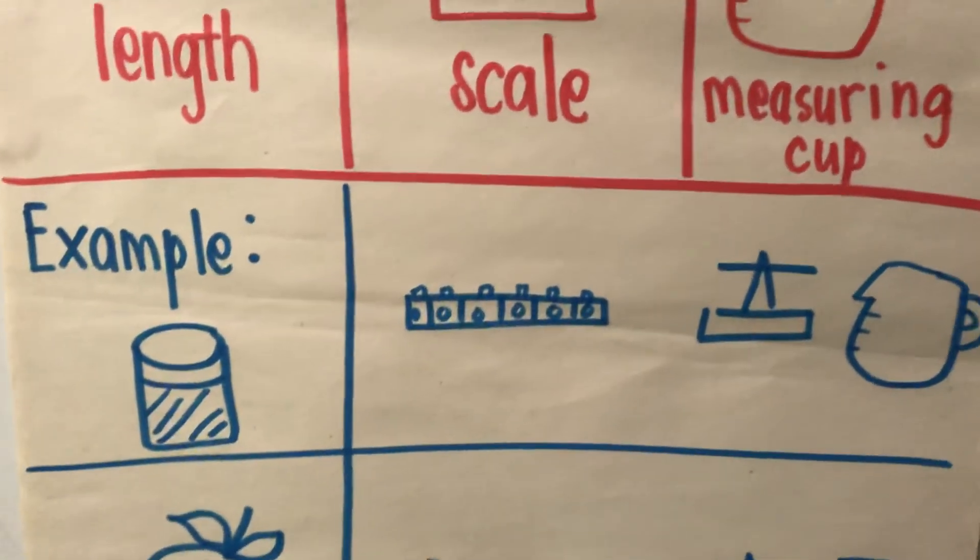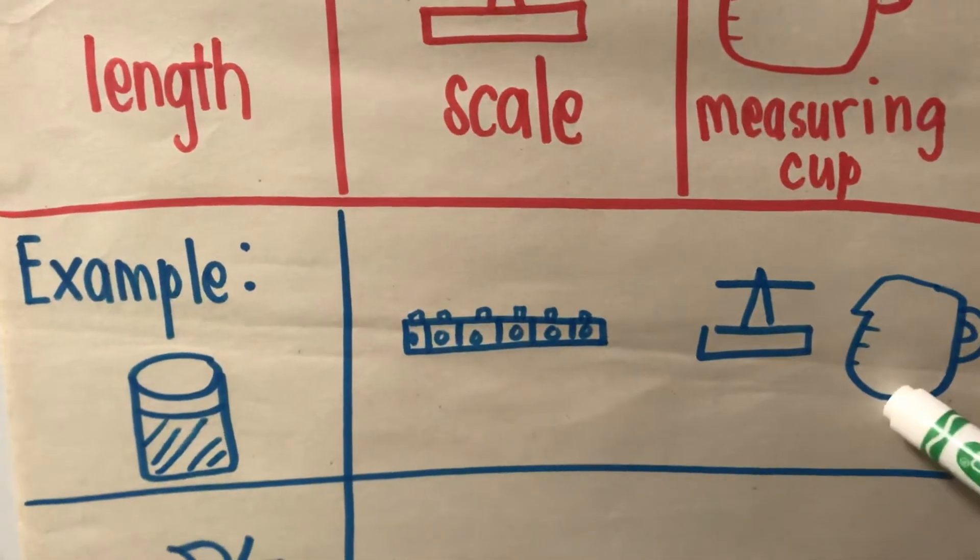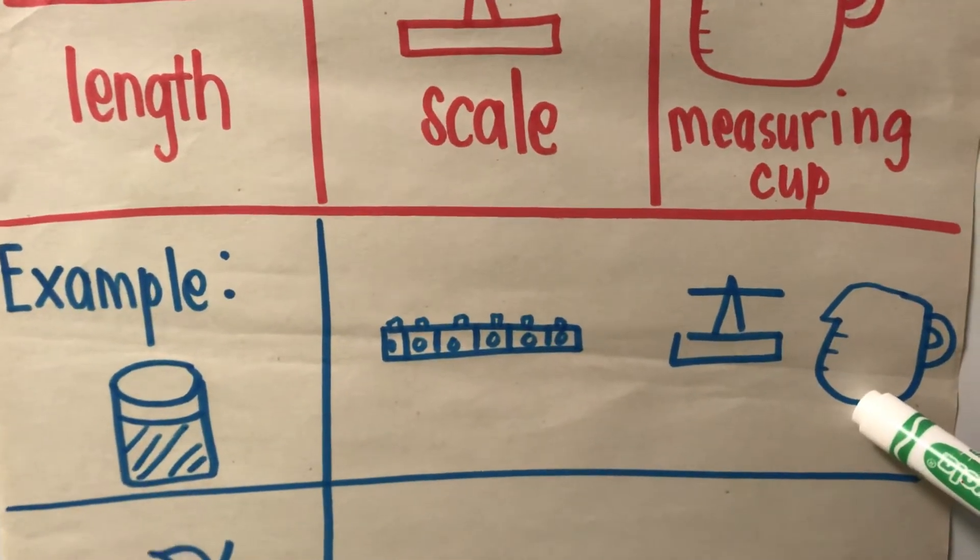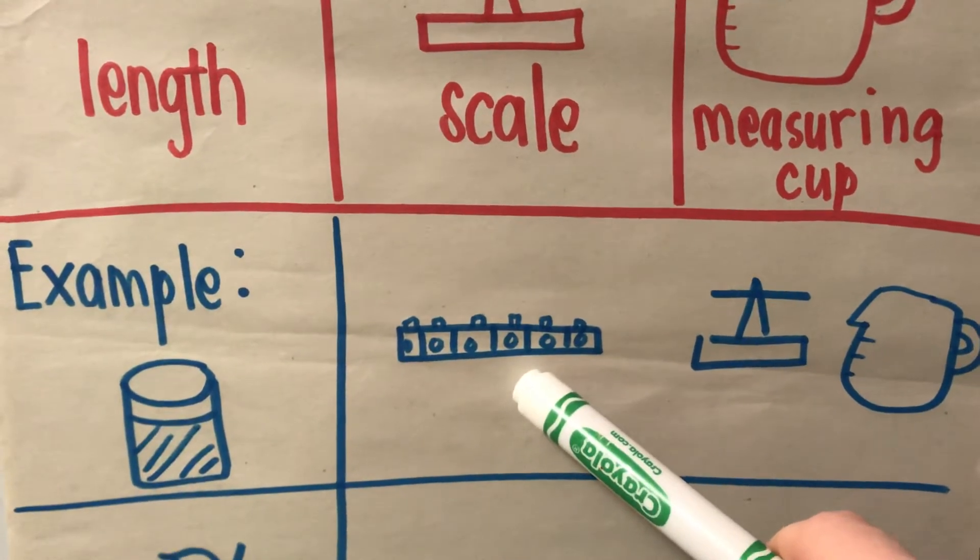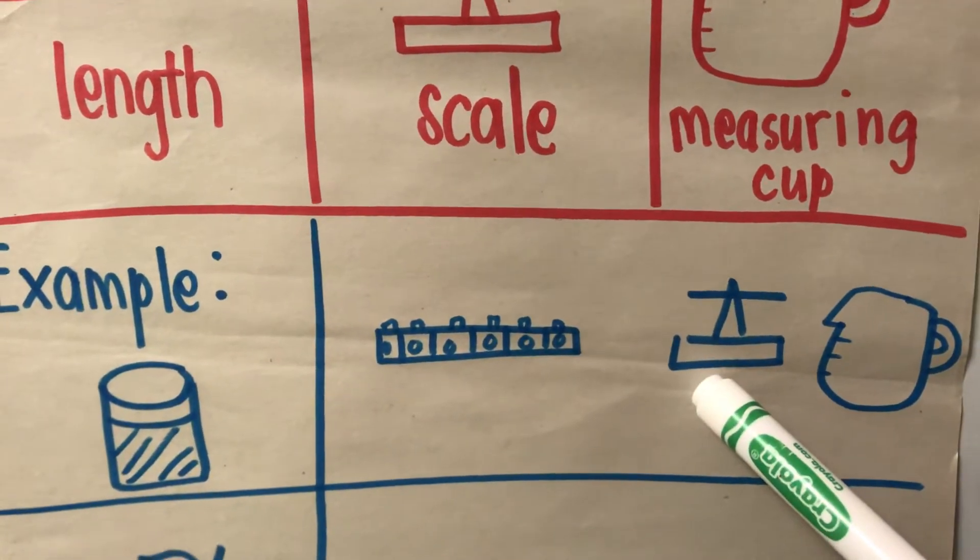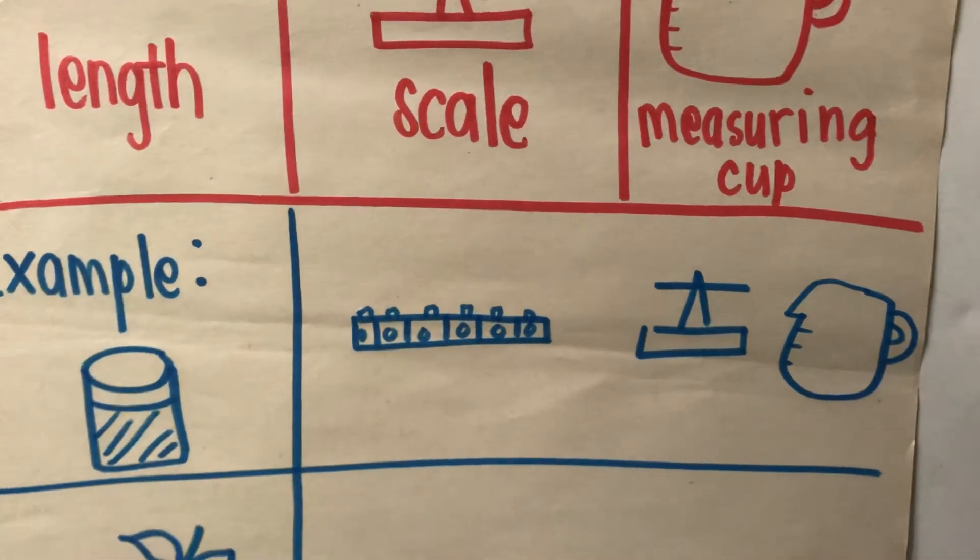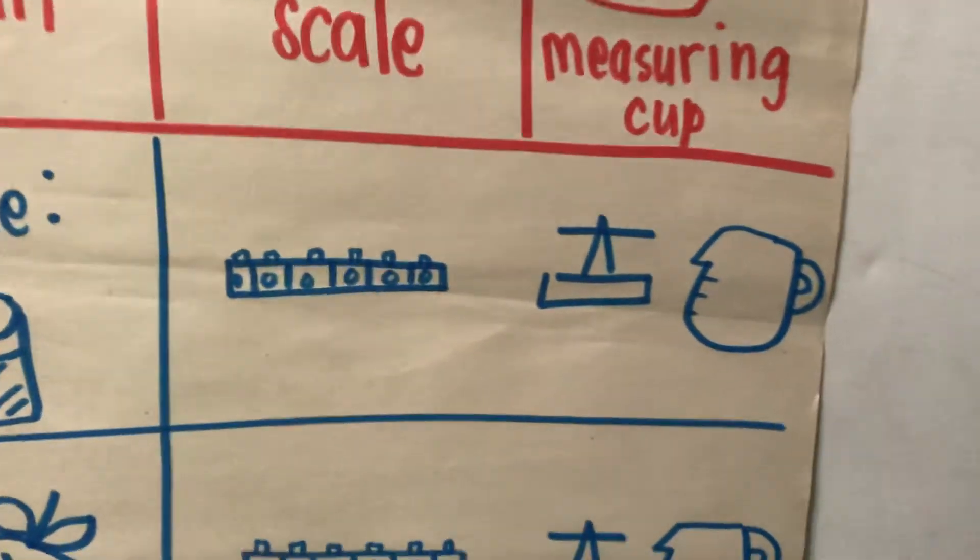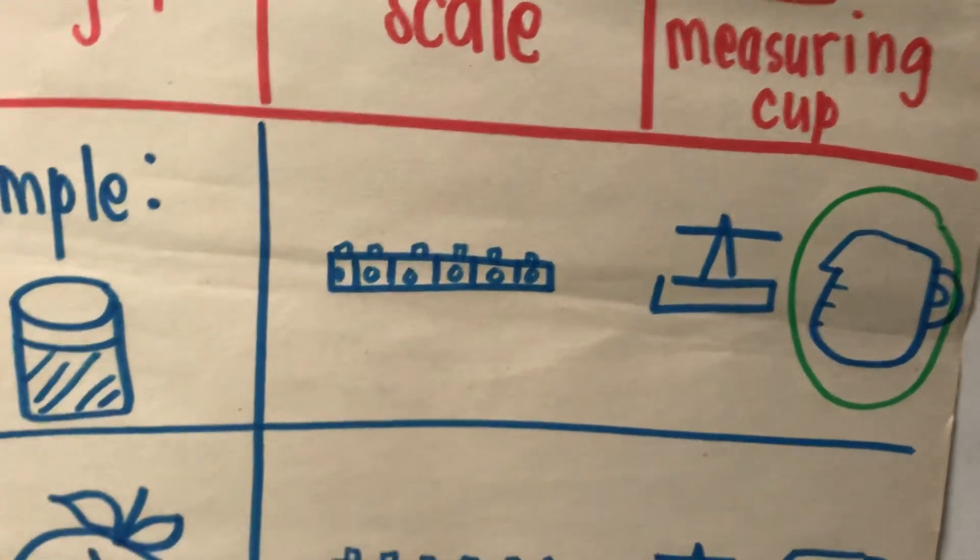Let's look at the example. If we have a glass of water, what is the best tool to use to measure the water? We're not going to use length. We probably could weigh it, but the best way is for us to use a measuring cup. A measuring cup measures liquid. Very good.